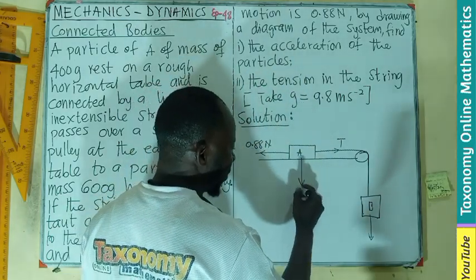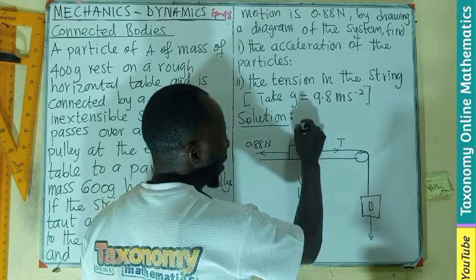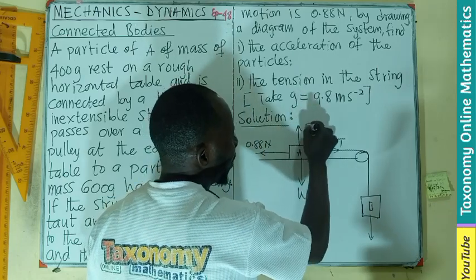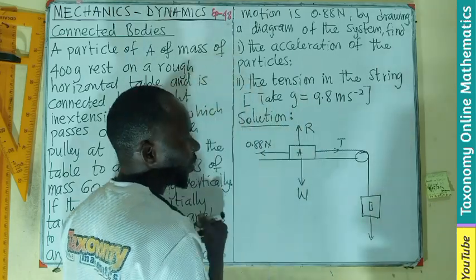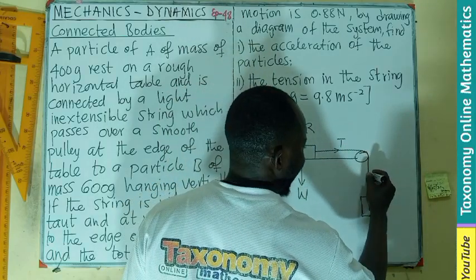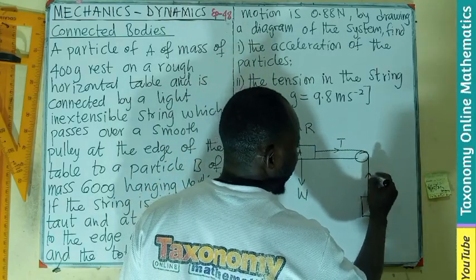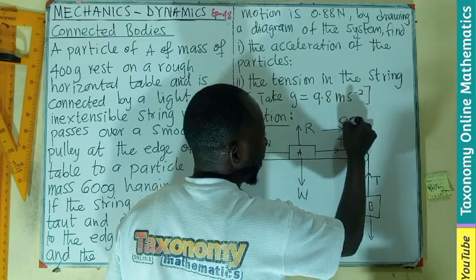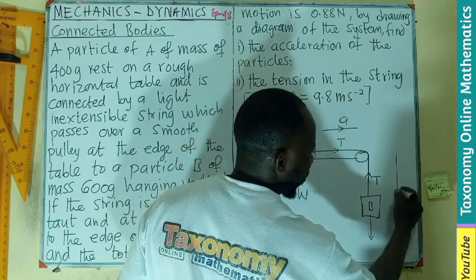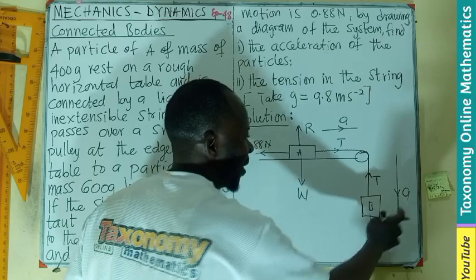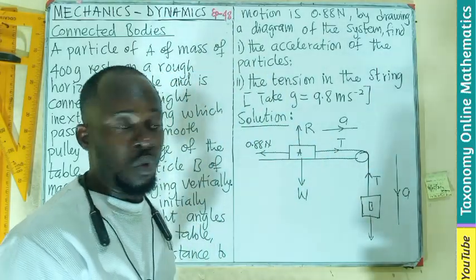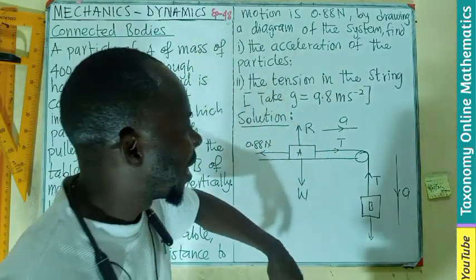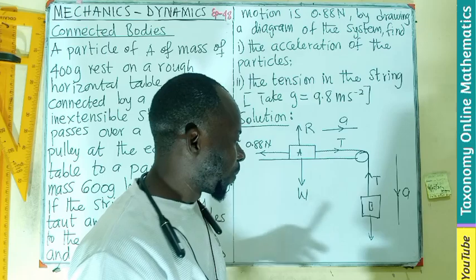This is hanging with a tension in it, then we have the body B also hanging here. There's going to be a weight of the body, there's going to be normal reaction, friction, there's going to be a tension which is moving in the direction, and I should have an acceleration.